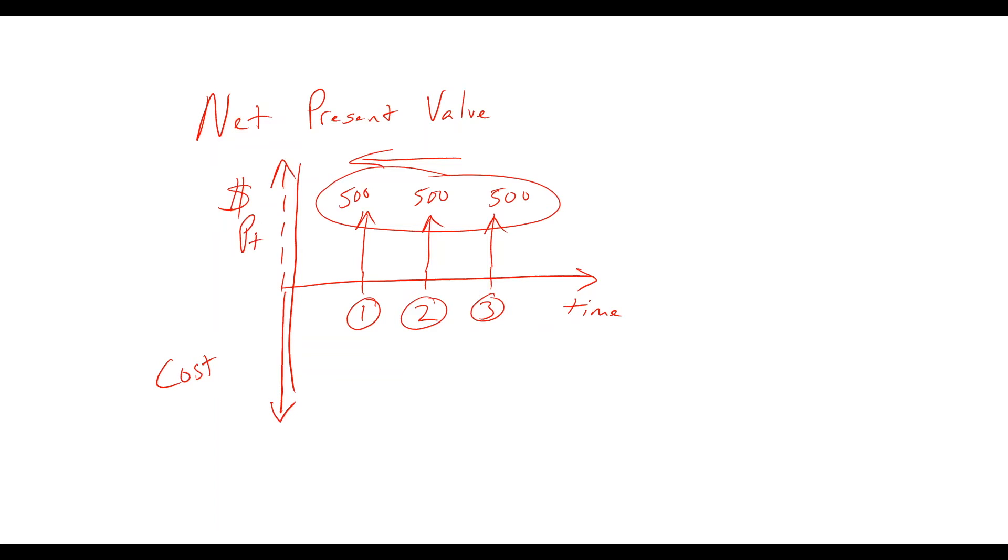We would call this the P positive—that would be the present value of the positive cash flows. The reason we call it net present value is because it equals the P positive minus the cost. So ultimately, we're going to move this money back in time and figure out what its estimated value is today.